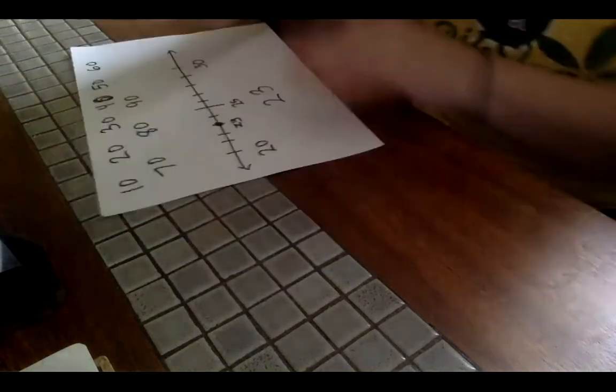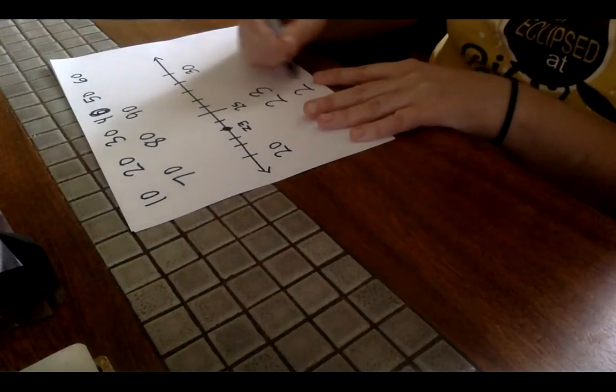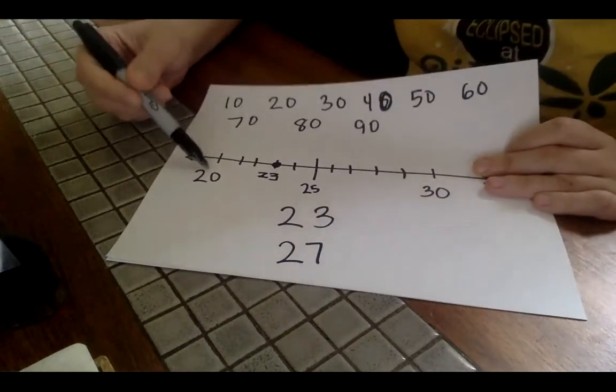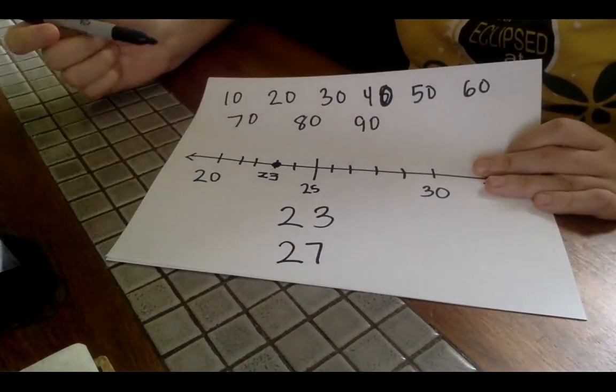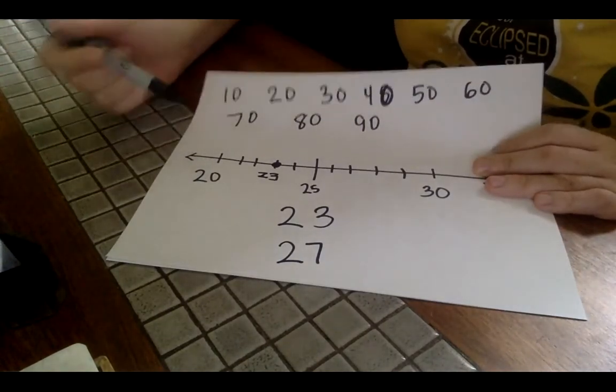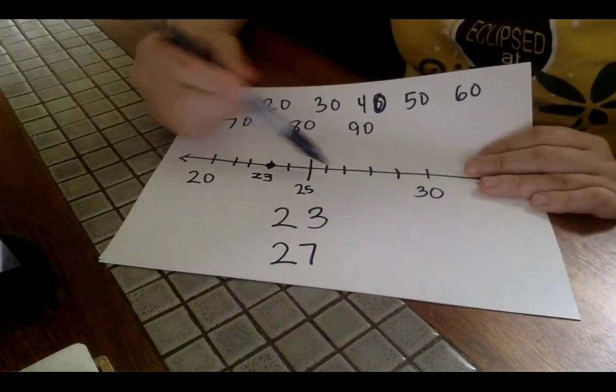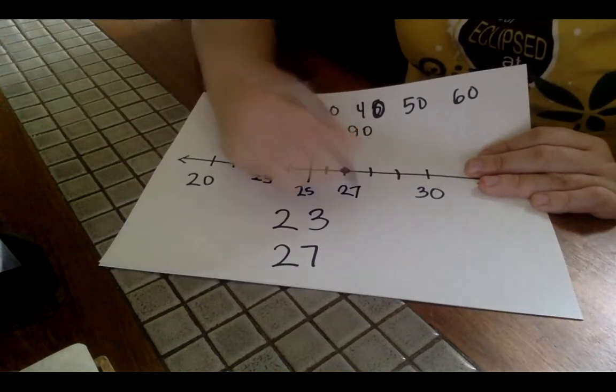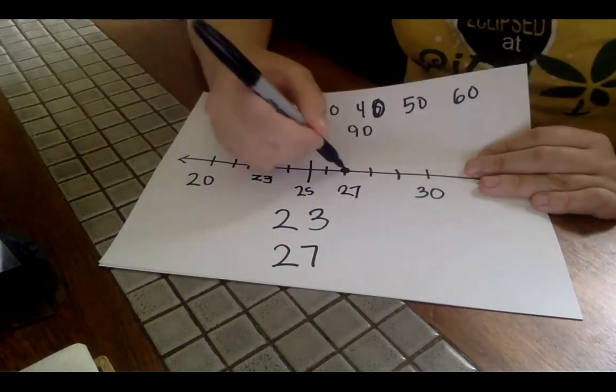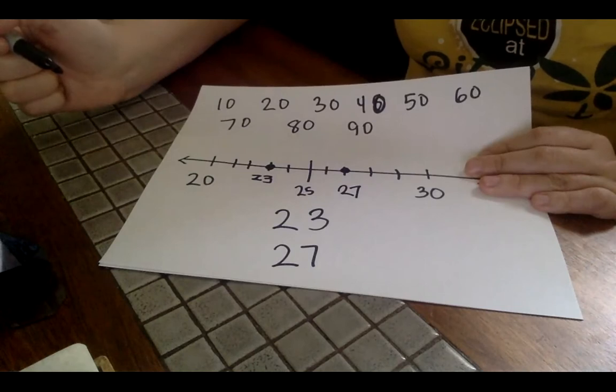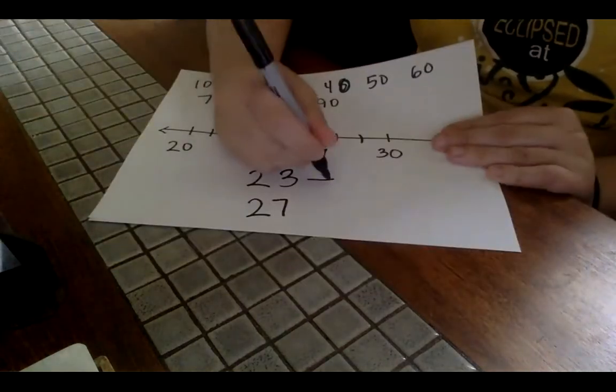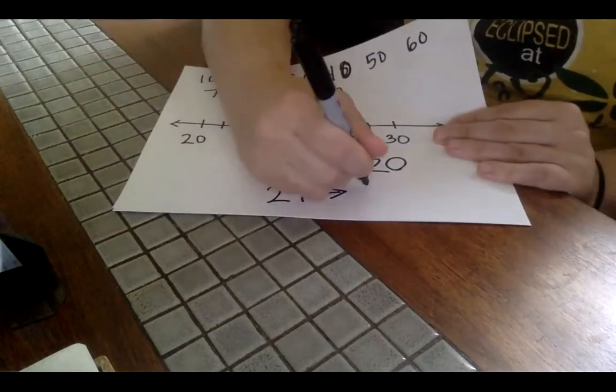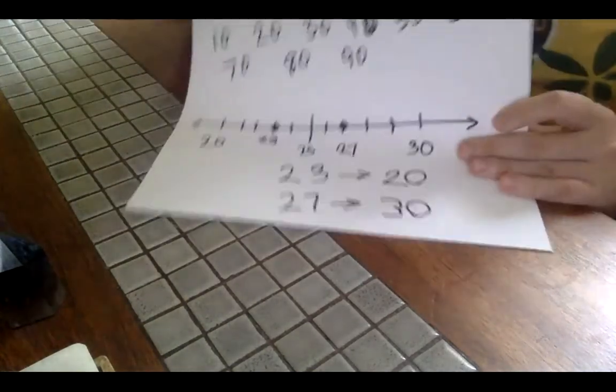Now, let's say I wanted to round 27. What's 27 going to round to? Is it going to round to 20, or is it going to round to 30? Well, let's see. 25, 26, 27. I see that 27 is closer to 30. So 27 would round to 30.